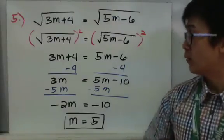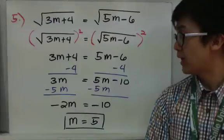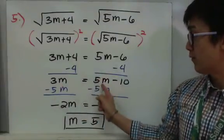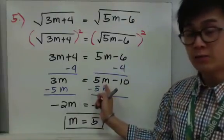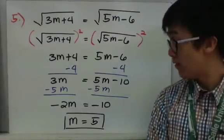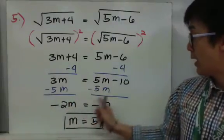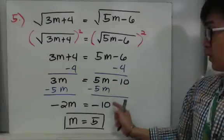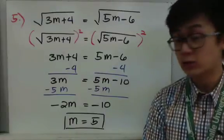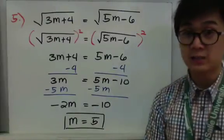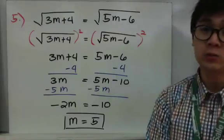I subtracted 4 on both sides and I'm left with 3m equals 5m minus 10. Since m is on the other side of the equation, we need to get rid of that by subtracting 5m on both sides. So we have 3m minus 5m which gives us negative 2m, and the 5m is cancelled out, leaving us with negative 10. To get rid of negative 2 by m, we divide both sides by negative 2, giving us negative 10 over negative 2 which equals positive 5. So m is equal to 5.